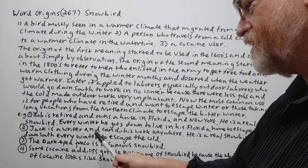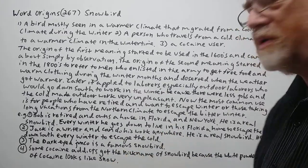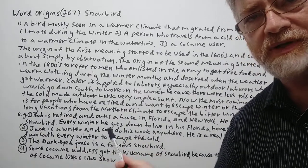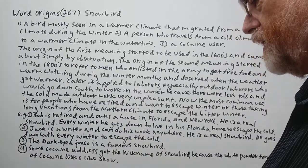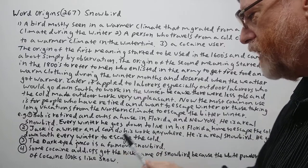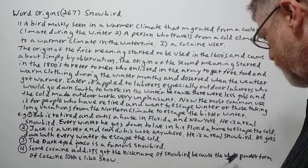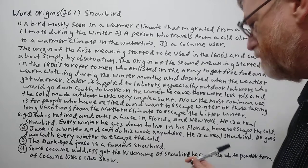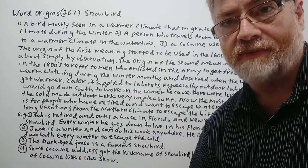Number three: the dark-eyed Junco is a famous snowbird — this is actually one type of bird that is a snowbird. Number four: some cocaine addicts got the nickname of snowbird because the white powder form of cocaine looks like snow.